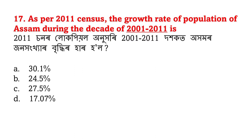As per the 2011 census, the growth rate of population of Assam during the decade of 2001 to 2011 is being asked. The population growth rate of Assam for that decade is 17.07%.